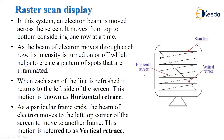Two important terms here are horizontal retrace and vertical retrace. Horizontal retrace refers to when each scan line is completed and the beam returns to the left side of the screen. Vertical retrace refers to when a particular frame ends and the electron beam moves from the bottom back to the top-left corner of the screen to begin the next frame, continuing the same process again.